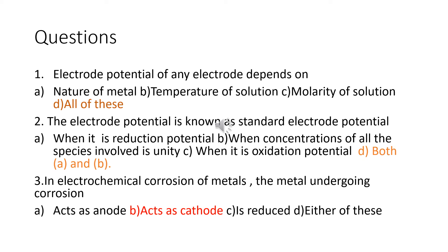Next question: The electrode potential is known as standard electrode potential when — options: A) when it is reduction potential, B) when the concentration of all species involved is unity, C) when it is oxidation potential, D) both A and B. The answer is both A and B. Standard electrode potential is the electrode potential under the condition of unit concentration, that is one molar concentration, at 25 degrees Celsius (298 K) and one atmospheric pressure of all the species in the half cell.